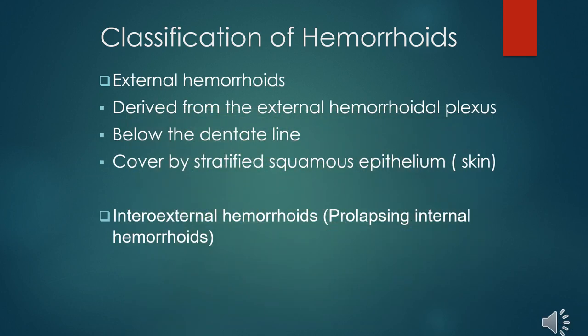External hemorrhoids are derived from the external hemorrhoidal plexus, below the dentate line, covered by stratified squamous cell epithelium or skin. These are the ones that tend to mostly thrombose. Then there are prolapsing internal hemorrhoids that prolapse and find their way externally, coming from inside to the outside.